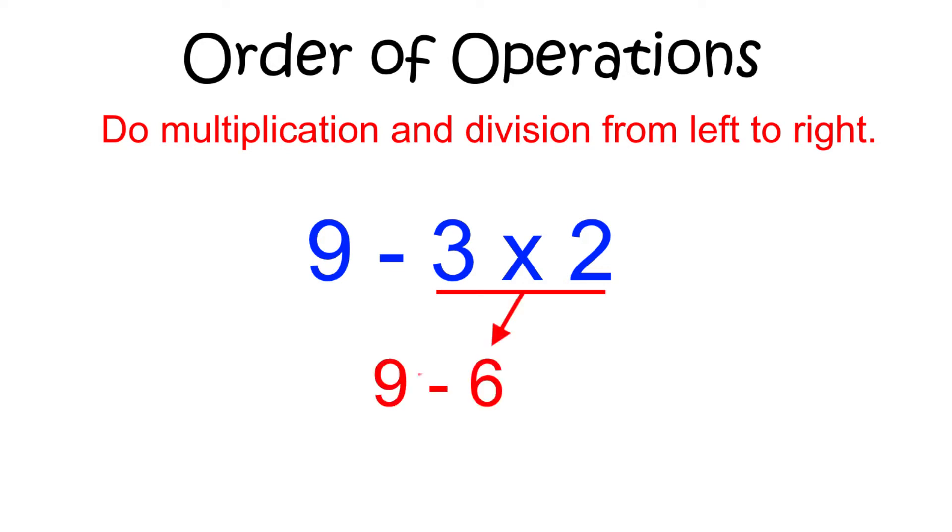Once all multiplication and division are complete, we then add and subtract left to right. In this case, we start with 9 and take away 6, leaving 3 as our final answer.